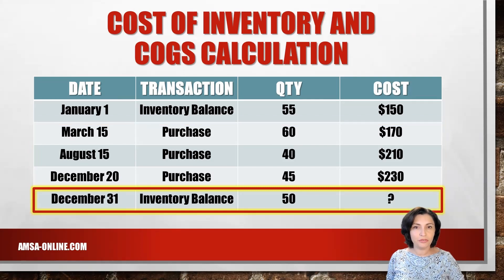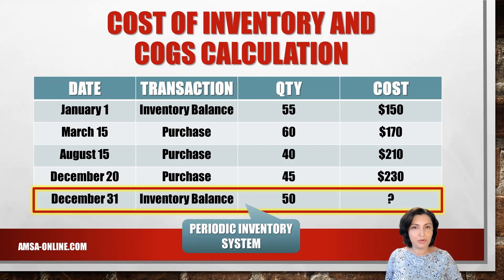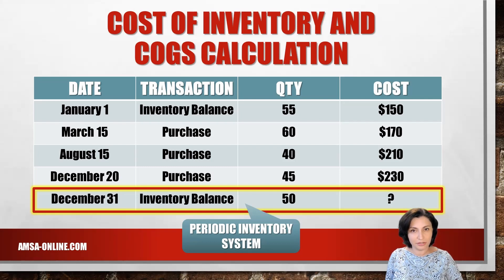There were 50 units left in the physical inventory at December 31st. Note that we use a periodic inventory valuation system for this exercise; therefore, no dates of sale are required. The periodic inventory system is a method of inventory valuation for financial reporting purposes in which companies perform a physical count of the inventory at specific intervals.